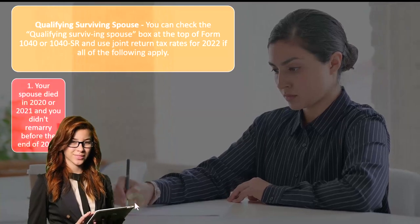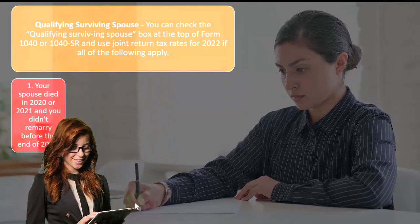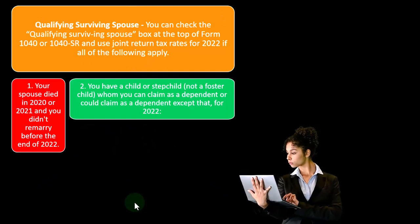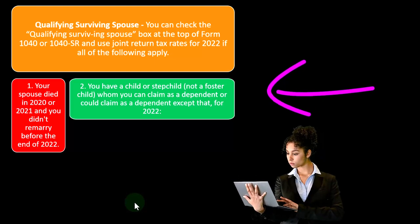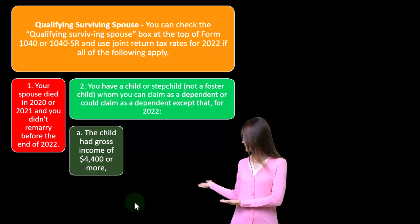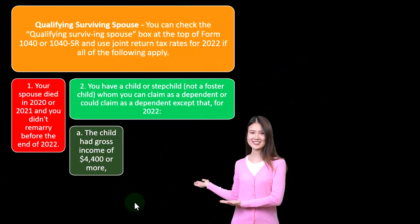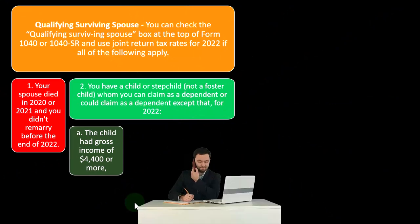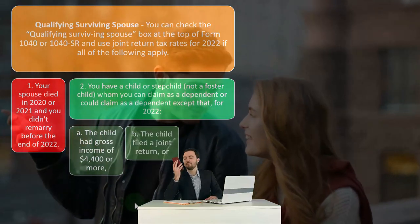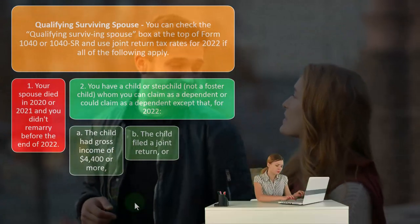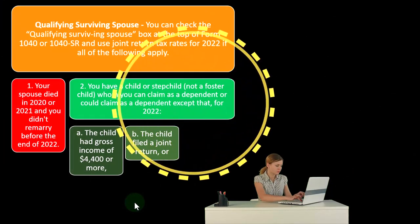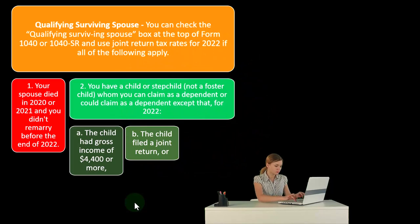Requirement one: your spouse died in 2020 or 2021, and you didn't remarry before the end of 2022. Requirement two: you have a child or stepchild — not a foster child — whom you can claim as a dependent, or could claim except that for 2022: (a) the child has gross income of $4,400 or more, or (b) the child filed a joint return because they got married — so they wouldn't be your dependent but could still allow you to qualify for the qualifying surviving spouse filing status.